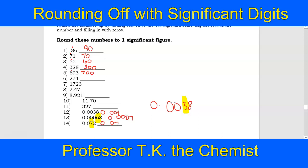I'm going to do one more example, such as number 10, because I'm sure this is going to give you all some questions to think about. You've got 11.70 and we only want one significant digit. Well, my first significant digit is the one right here.